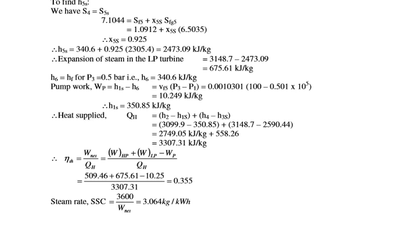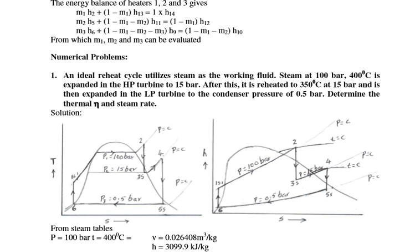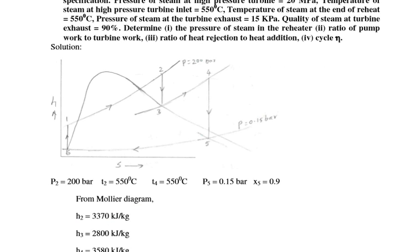In this numerical we understood the reheat cycle — heat is added extra in the reheater. The Rankine cycle and reheat cycle are both present. Different pressures and temperatures are given, and we determined efficiency and steam rate. Now we will take another numerical based on the Rankine cycle with reheat.